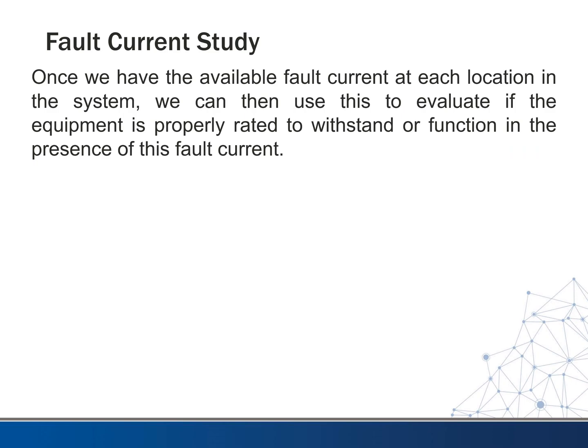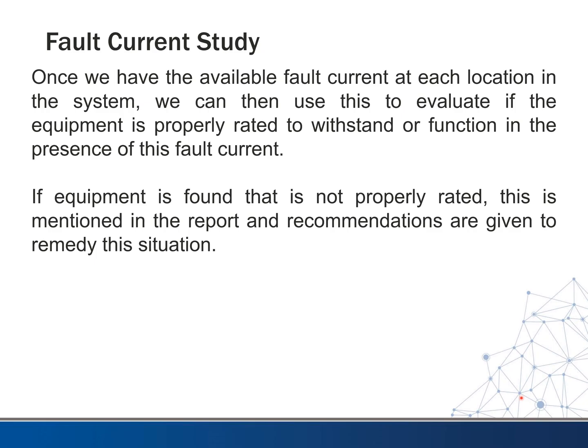Once we have the available fault current at each location, we can evaluate if the equipment is properly rated to withstand or function in the presence of this fault. This is very important — one of the most important calculations we do — because if it's not rated for it, we're going to have a catastrophic event. If the equipment is found to not be properly rated, this is mentioned in our report and we'll usually give recommendations to remedy the situation, such as swapping out a breaker, changing out the entire panel, changing a disconnect, or changing fuses.